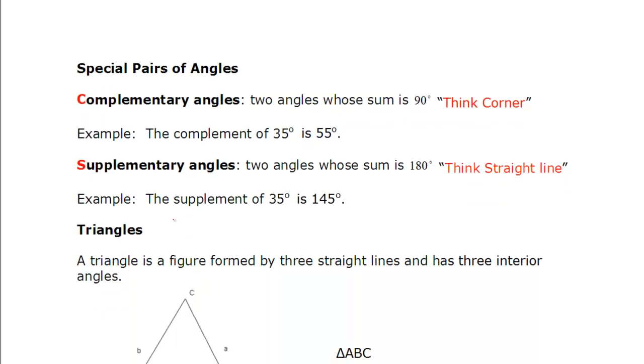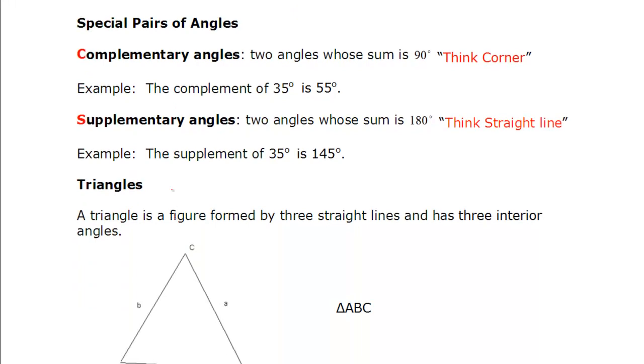We can have special pairs of angles. Angles can be complementary, which means two angles whose sum is 90. And we have think corner written here. Corner, complementary, because we think it looks something like this, where we get a 90 degree angle, or a corner, and the two angles inside add up to get that 90. So, for example, we could have 40 and 50, or 35 and 55, any combination that add up to 90.